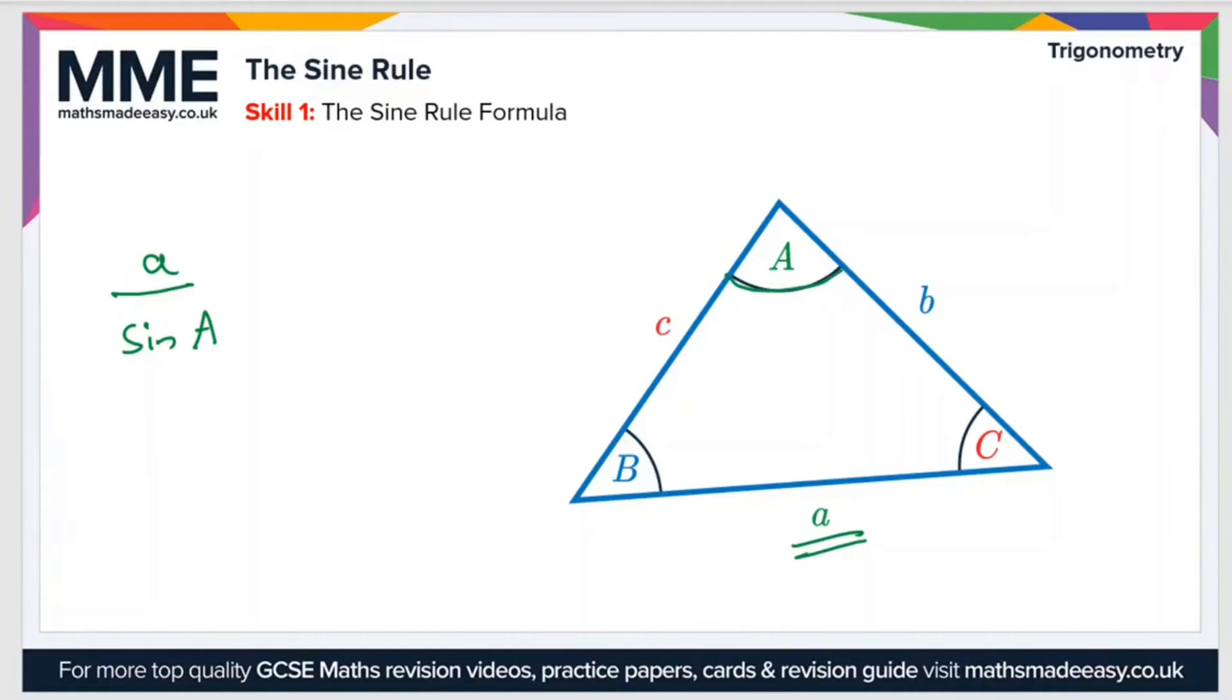So A, the side length A over sine A, that's the ratio between side length A and sine A, is equal to the ratio between side B and sine of angle B, which is equal to the ratio between side C and the sine of angle C.